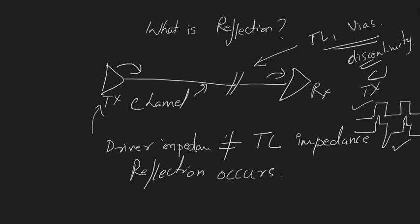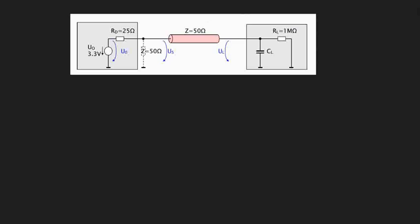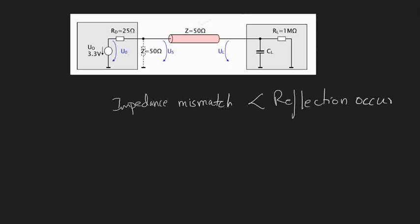This is an ideal signal and this is a non-ideal signal. Now let's take an example of how reflection looks like. I am having a transmission line of 50 ohm impedance and 25 ohm is the driver's impedance. So there is an impedance mismatch between 25 and 50 — both are not equal — and because of this impedance mismatch, reflection occurs. The amount of signal that gets reflected is defined in the form of the reflection coefficient.